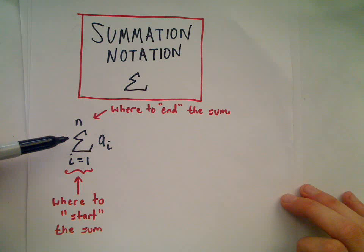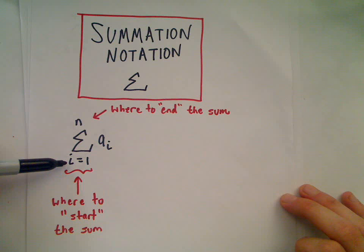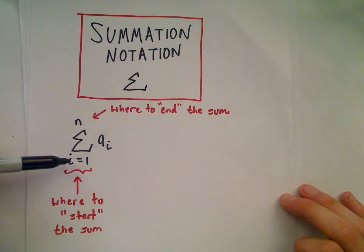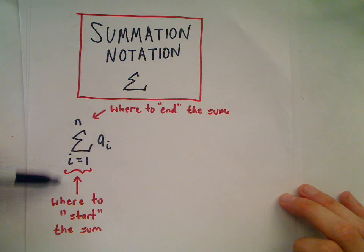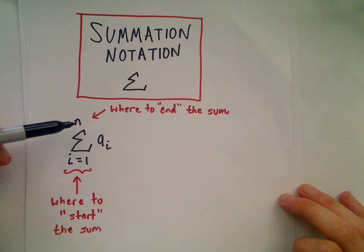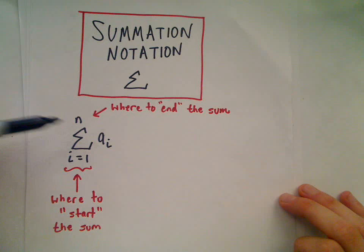The idea with summation notation is there's this big capital Greek letter called sigma that looks like a big E. At the bottom you'll have what's called the index, and there'll be a variable associated with that index. Wherever this number at the bottom starts, that's where we're going to start our sum, and the value at the top is where we're going to end the sum.